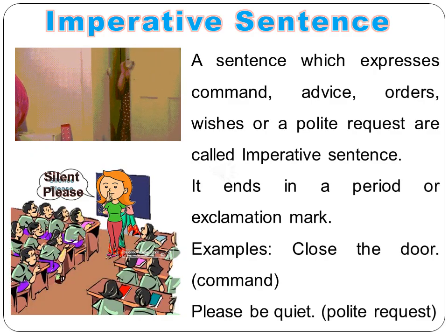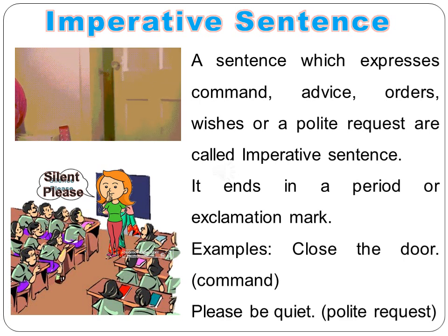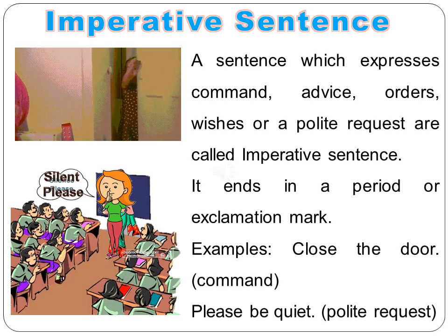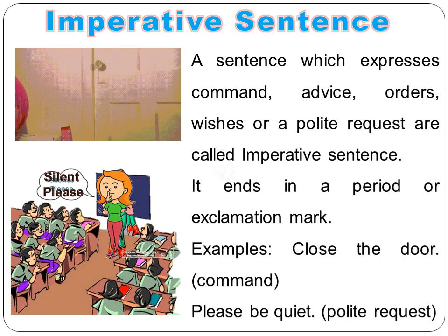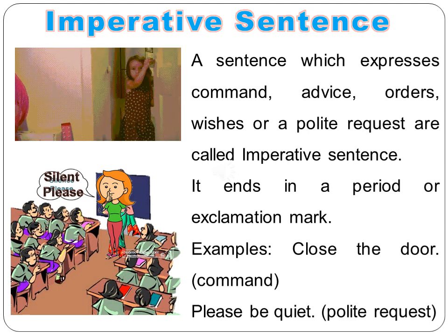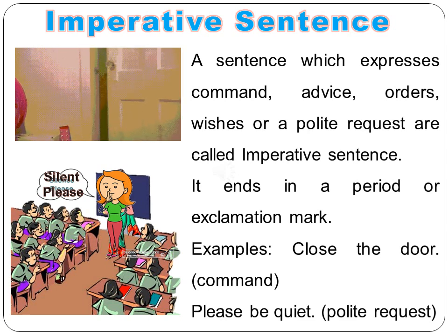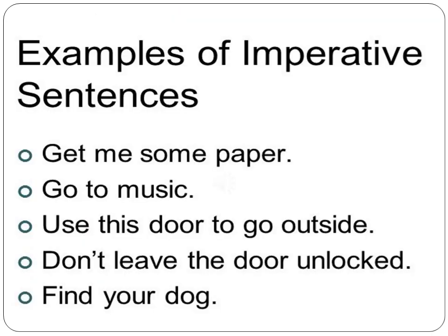Imperative sentence: A sentence which expresses command, advice, orders, wishes, or a polite request is called an imperative sentence. It ends in a period or exclamation mark. Example: 'Close the door' is a command. 'Please be quiet' is a polite request. Examples of imperative sentences are: 'Get me some paper.' 'Go to the music store.' 'Use this door to go outside.' 'Don't leave the door unlocked.' 'Find your dog.'